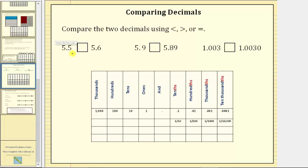Let's place both decimals in the place value chart below where we have 5.5 and 5.6. To compare two numbers we want to compare the digits in the place values from left to right, or from the greatest place value to the least place value.